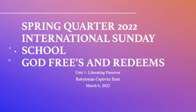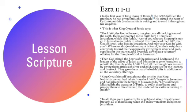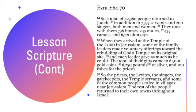Today starts the spring quarter. The theme for this quarter will be 'God Frees and Redeems.' All the lessons in March will be focusing on liberating Passover. The Bible scriptures for today are from Ezra chapter 1 verses 1 through 8, then verse 11, then chapter 2 verses 64 through 70. The lesson title is 'Babylonian Captivity Ends.'